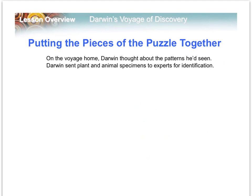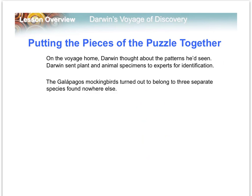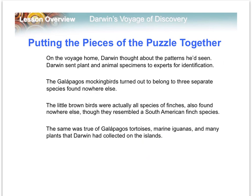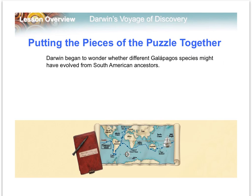Darwin started thinking about these patterns while sailing back home. After returning, he found out the mockingbirds were three separate species not found anywhere else, and those small brown birds turned out to be distinct species of finches also unique to the islands. The same was true for most animals found on the Galapagos — the tortoises, the iguanas, and many other specimens. The big question Darwin had was how these animals got to the Galapagos Islands, and why they looked similar to animals elsewhere yet were distinctly different.